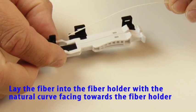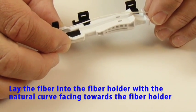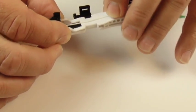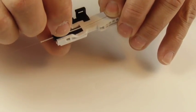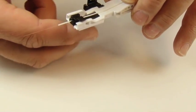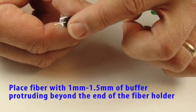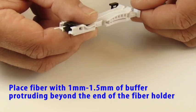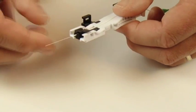Lay the fiber into the fiber holder with the natural curve facing toward the fiber holder. Place fiber with 1 millimeter to 1.5 millimeters of buffer protruding beyond the end of the fiber holder.